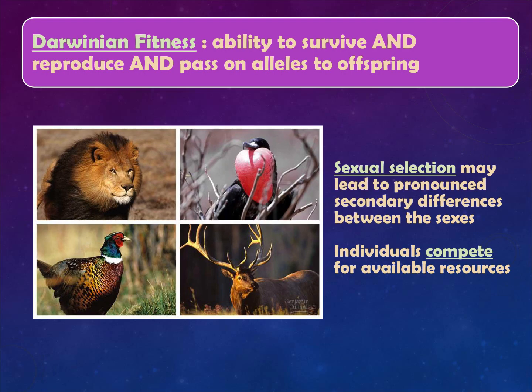A key feature of Darwinian fitness is reproduction — not only surviving an environment, but reproducing and passing on your genes. In Darwin's view, if you're not passing on your genes to offspring, there's no evolutionary point. Sexual selection is the idea that animals have a choice in who they breed with — this is where we get colorful birds, big antlers on males, and big lion's manes. Males usually show off to attract females, and the female selects to mate with the 'best' male.